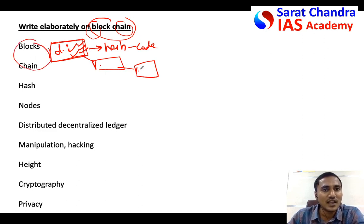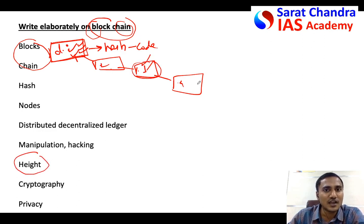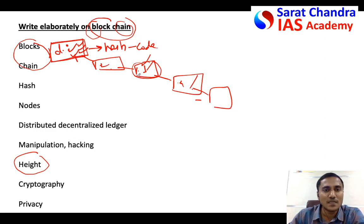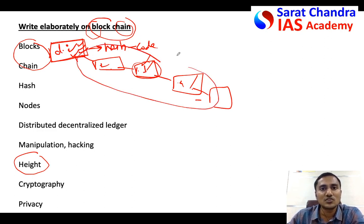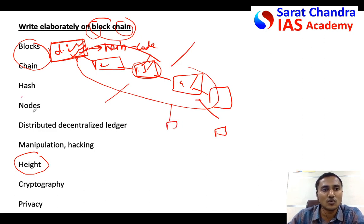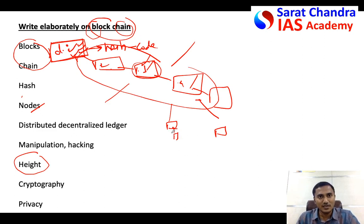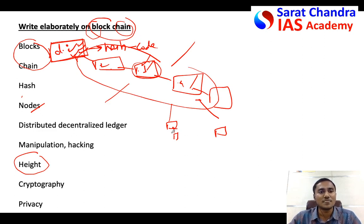Several blocks are connected in the form of a chain — that is why we call it blockchain technology. The position of each block is called its height: height 3, height 4, height 5, and so on. The entire blockchain is connected to several computers, called miners or nodes. The entire blockchain copy is present in every connected computer, so the blockchain copy is not centralized in a single place — it is decentralized across every computer connected to the blockchain.